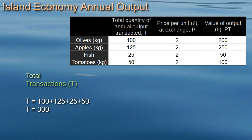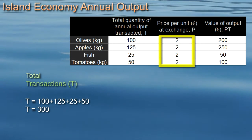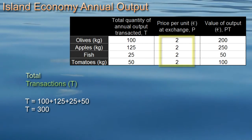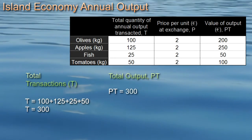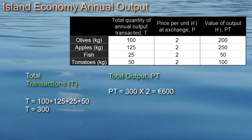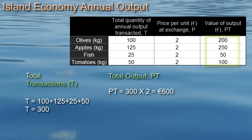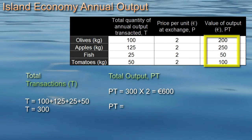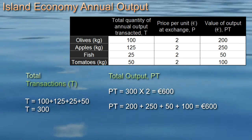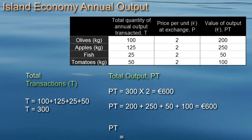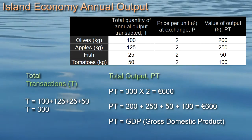At this time the price of each of the four kinds of outputs is two euros, so the average price of each transaction, which we'll call P for price in euros, is obviously two. The value of the society's output is P times T — two times three hundred — equals six hundred. Alternatively, the value of the output is the sum of each community member's output: 200 plus 250 plus 50 plus 100 equals 600. The total value of output produced within a country's borders is often called gross domestic product, GDP. So PT is the same as GDP.